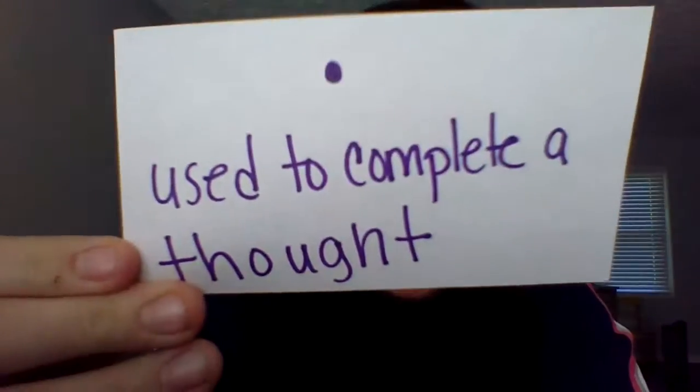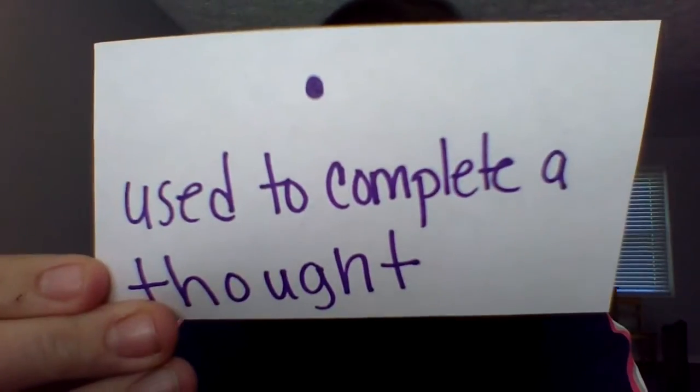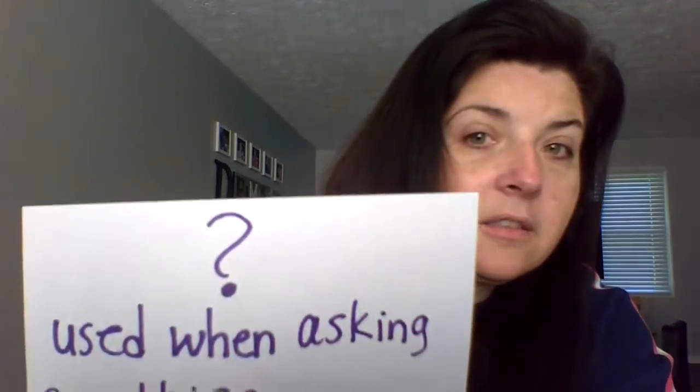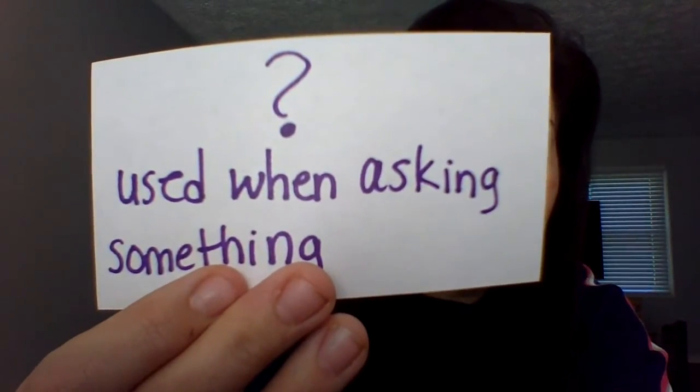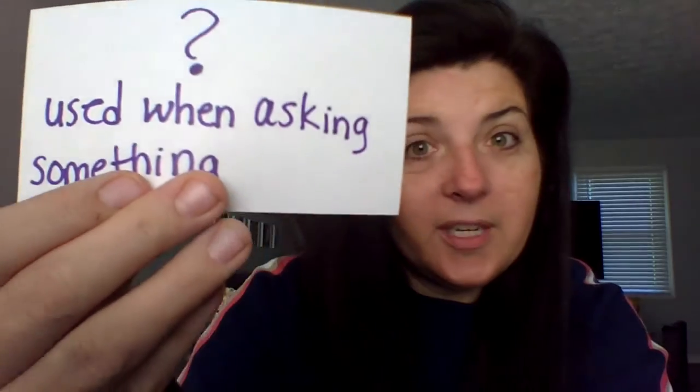A period is used to complete a thought. A question mark is used when asking something. A complete thought would be something like: my dog is brown, or I went to the park, or I had to do my homework today.